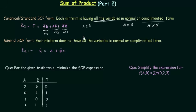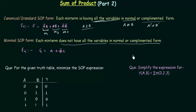In all the min terms we have A and B in normal or complemented form — that is all about the canonical or standard SOP form. In the minimal SOP form, each min term does not have all the variables in normal or complemented form. We use Boolean algebra, K-map method, or tabular method to minimize this and obtain the minimal SOP form.